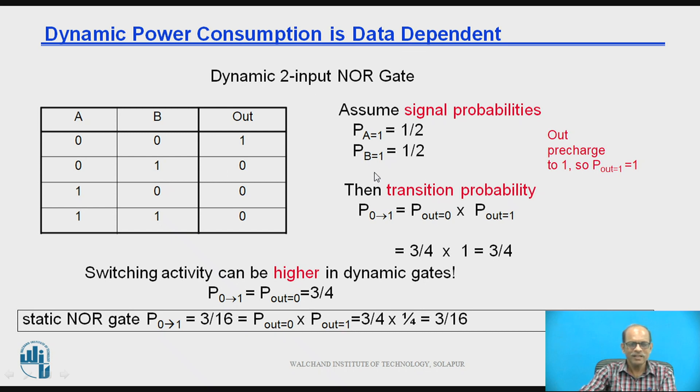Now dynamic power consumption is data dependent. So this is the 2 input NOR gate. So from this table of the 2 input NOR gate, you can see that probability of A equal to 1 is 1 by 2, probability of B equal to 1 is 1 by 2, then output precharge to 1. Then the transition probability P 0 to 1 is 3 by 4 into 1, 3 by 4. And the static NOR gate, probability of changing 0 to 1 is 3 by 16. And how it is obtained, so P out 0 and P out 1. So P out 0 is 3 by 4 from the truth table, and P out 1 is 1 by 4. So if you take product, it is coming as 3 by 16. So in this way we can prove that the dynamic power consumption is data dependent.